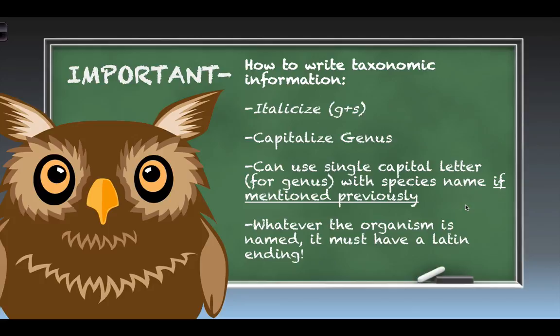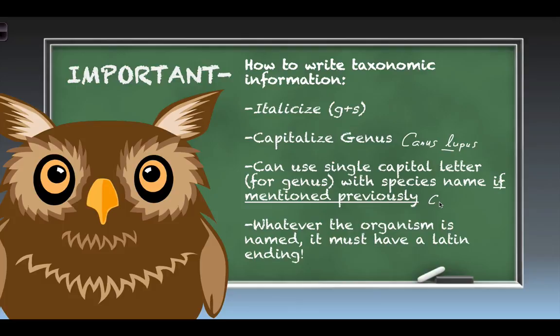For the biology student, there are a few important things to remember when writing taxonomic information. We must italicize both genus and species, and we must capitalize the genus. So for the gray wolf — Canis lupus — I start with a capital C and italicize, leaving the species first letter lowercase. You may also use a single capital letter for the genus with the species if it has been mentioned previously, so after first use, C. lupus italicized will do the job.